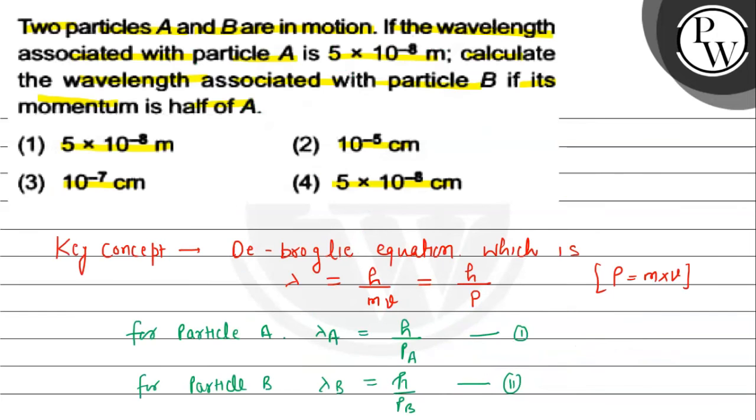Now you can see option number B matches with our observation, the wavelength for particle B that is 10^-5 centimeter. So option number B will be the correct option. Key concept is de Broglie equation Lambda equal to h on mv. Hope you understood it well, best of luck.